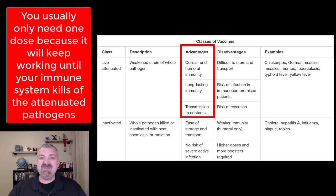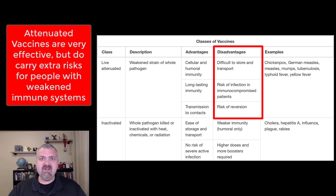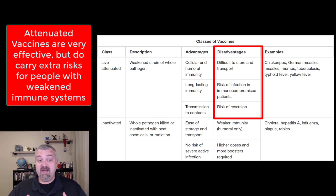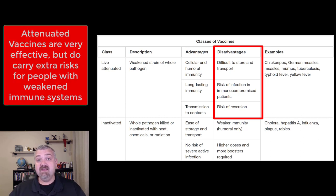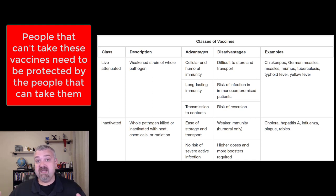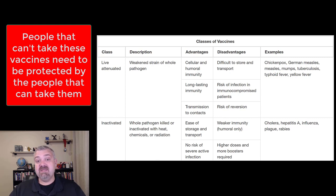Another advantage is transmission to contacts — since you are infected, you can technically spread this weakened version to others. The disadvantage is that because it's a living organism, there's always the risk that if you're immunocompromised, this infection would be enough to make you sick. You would never give this vaccine to someone who is immunocompromised. There's also the risk it can back-mutate into a more pathogenic version. This is why herd immunity is important — there are people who cannot be vaccinated because this kind of vaccine could be dangerous for them.